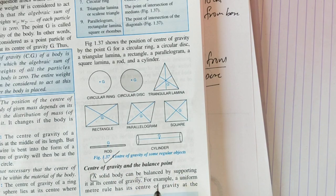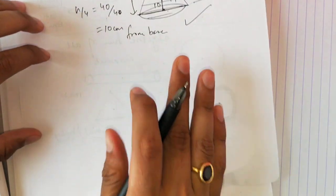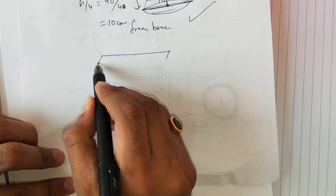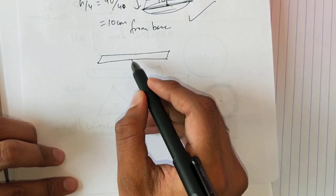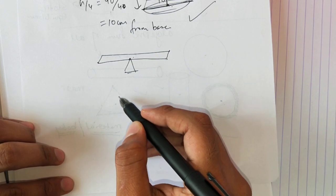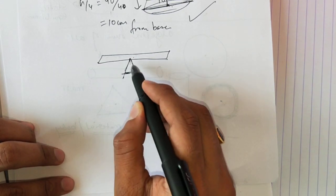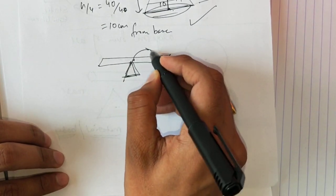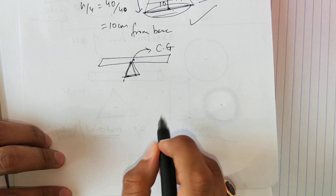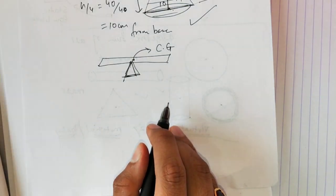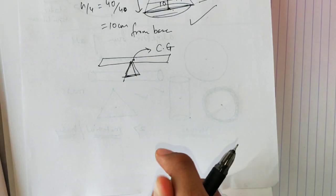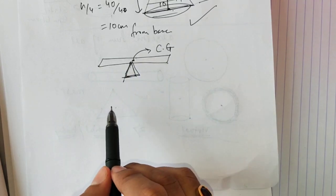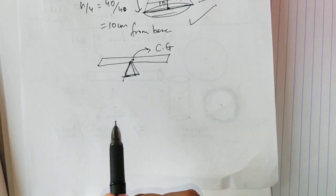The next topic is center of gravity and the balance point. You are able to balance certain objects — for example, a meter scale. You can balance a meter scale from its midpoint easily. Why? Because that midpoint is nothing but the center of gravity of that scale. Any object can be balanced from its center of gravity point.